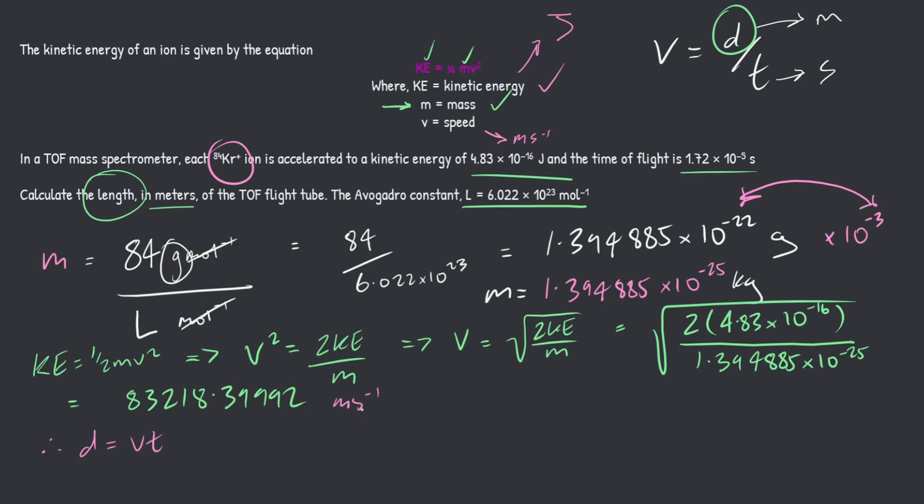So what we can say here then is that if they want the length of the flight tube, aka D, we can make D the subject by rearranging this. So all you have to do here is times both sides by T. So therefore, D equals V times T. Now, do we have V? Yes, we do. We just calculated it. So V is right here. Do we have T? Yes, given to you in the question, 1.72. Let's do that right now. 83,218.39992 multiplied by our time, 1.72 times 10 to the minus 5. Plug that in your calculator and you'll get an answer of 1.431356479. So that's the full answer that the calculator spits out. Is that our final answer? No, it's not.